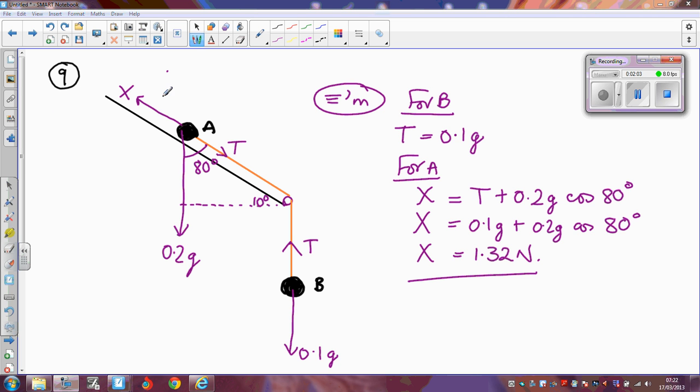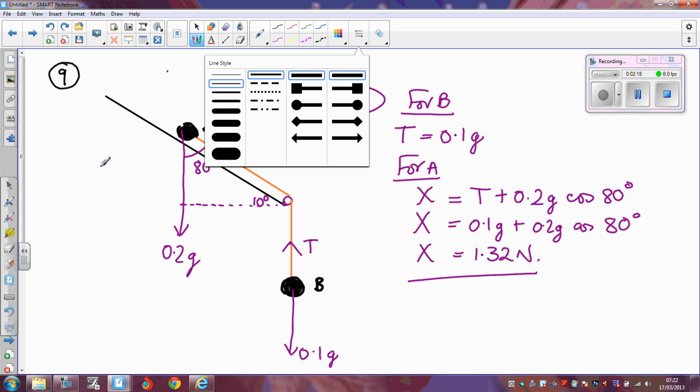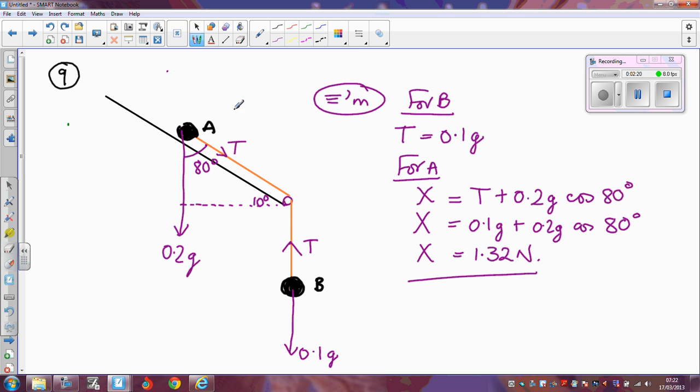OK, the second part of this question says that this x newton force is removed. OK, so what's going to happen is, instead of the whole thing just sitting at rest there on the slope, it's going to start to accelerate down the slope. I'll do this in green so we can distinguish between the two. So, what I'm going to do now, I'm going to assume that A is accelerating down the slope, which it will be, and B is accelerating in a downward direction.